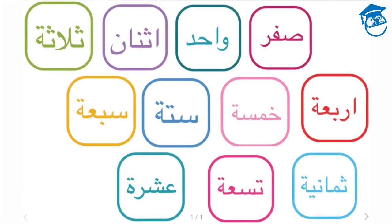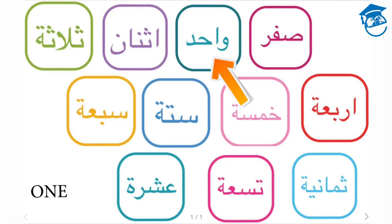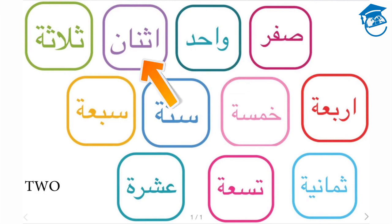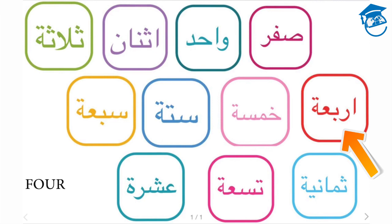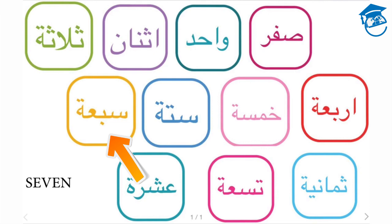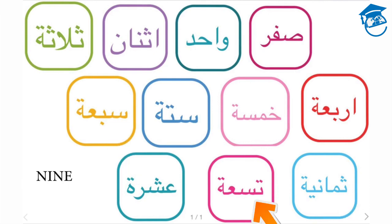Listen and repeat after me. We'll start with zero: sifr, wahed, ithnan, thalatha, arba, khamsa, sitta, sabah, thamanya, tisa, asherah.